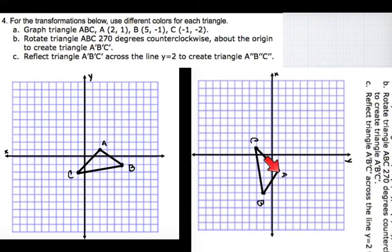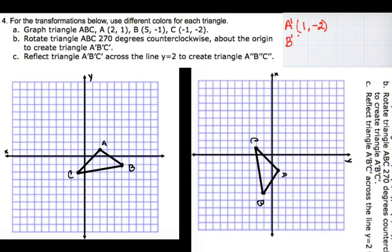A prime is going to be at (1, -2). B prime looks like it would be at (-1, -5), so B prime is at (-1, -5). C prime looks like it would be at (-2, positive 1), so C prime is at (-2, 1).